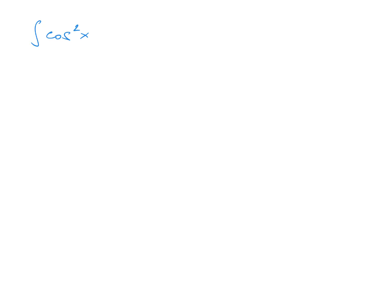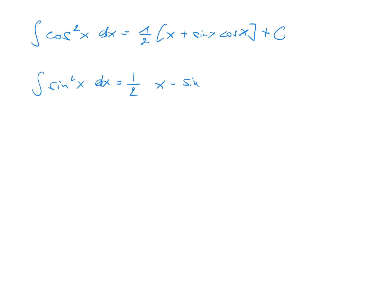There are also two formulas for squares. The integral of cosine squared of x dx is equal to 1 half of x plus sine x cosine x plus a constant. The integral of sine squared of x dx is 1 half of x minus sine x cosine x plus a constant. The way to find these formulas is by using the double angle identities: cosine squared is 1 half of 1 plus cosine 2x, and sine squared is 1 half of 1 minus cosine 2x.